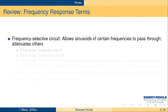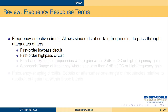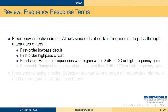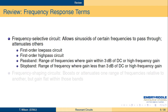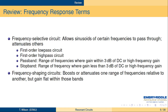Frequency selective circuits have pass bands and stop bands — they allow sinusoids of certain frequencies to pass through and attenuate others. We had the low-pass and high-pass circuits, both first order with the RC circuit. A pass band is defined as the range of frequencies where the gain is within 3 dB of the DC or high-frequency point, i.e., attenuation less than −3 dB. The stop band is where attenuation exceeds −3 dB. The 3 dB cutoff is somewhat arbitrary. The frequency where gain is 3 dB down — or 1/√2 in ordinary terms — is called the corner frequency.